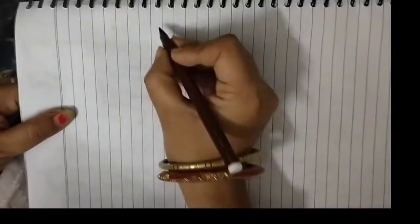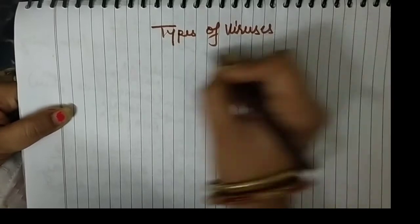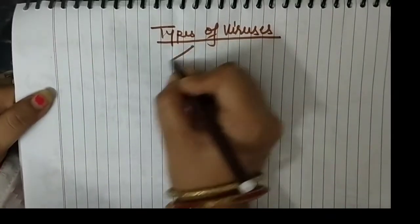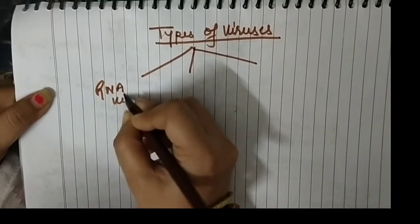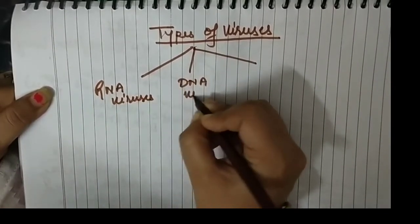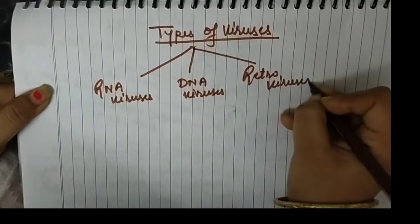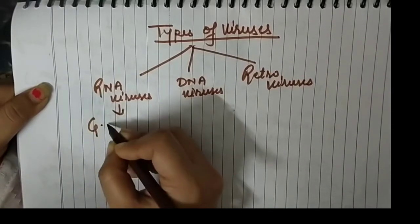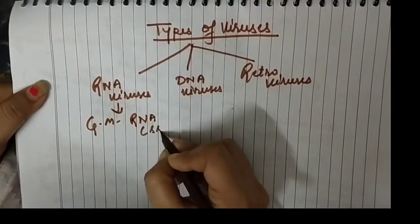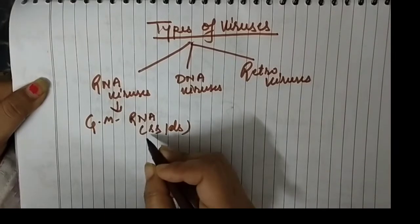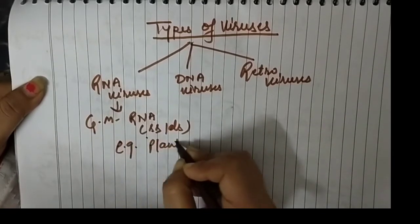Now the types of viruses. There are RNA viruses, DNA viruses, and retroviruses. RNA viruses are those which have their genetic material as RNA. RNA may be single stranded or double stranded. Most of the time these are present in plants, with some exceptions.